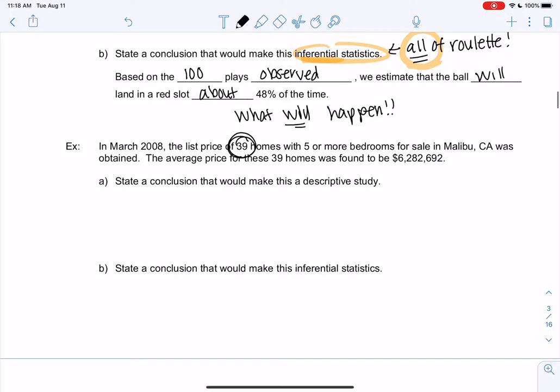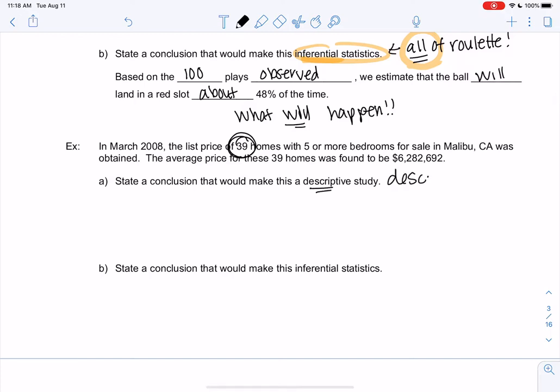So descriptive, again, is just describe. We're not talking about all of Malibu. We're only these 39 homes. So the average price, not really even writing anything new. I'm kind of writing what's already been stated because we're just describing what happened.